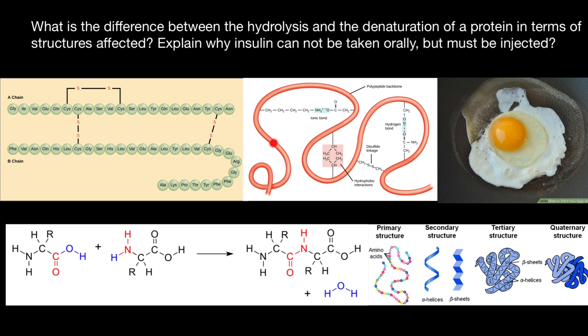The same is true for the sequence of amino acids, which are held by peptide bonds — as you can see here. So when we talk about denaturation of proteins, the tertiary and quaternary structures are disrupted, probably some secondary structure is disrupted as well, but the primary structure is not going to be affected at all.